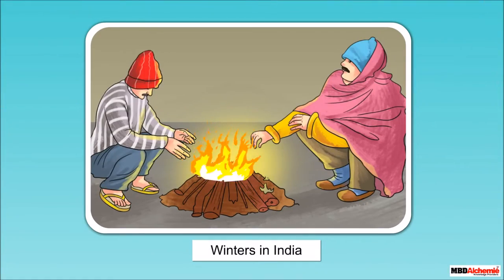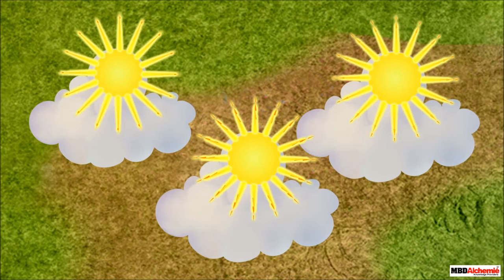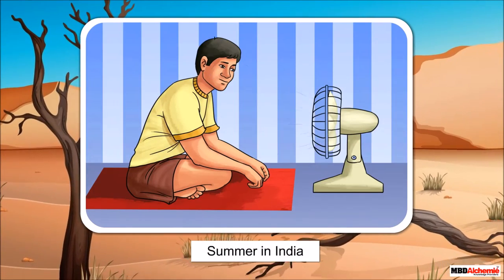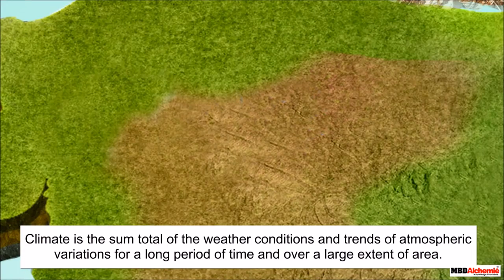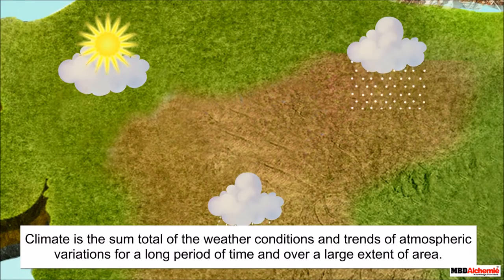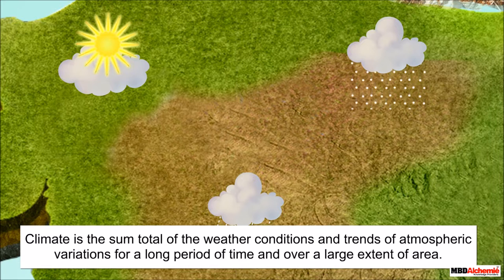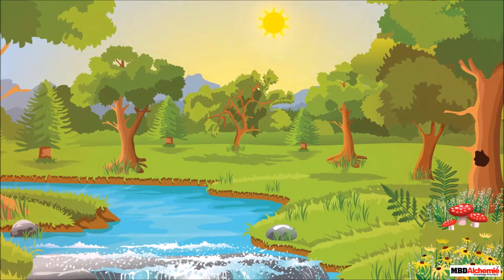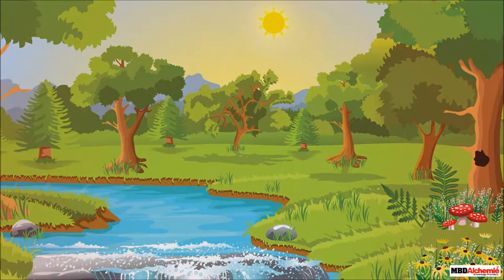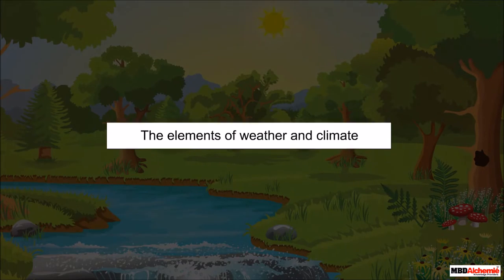When do we wear woolens and for how long? Isn't it true that in December and January we use thick woolen clothes? Similarly in the months of May and June we feel hot and uncomfortable because of high temperature. Therefore we can conclude that climate is the sum total of the weather conditions and trends of atmospheric variations for a long period of time and over a large extent of area.